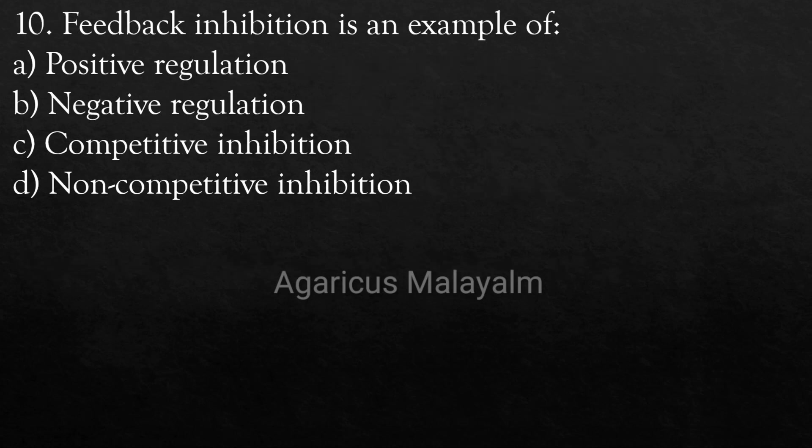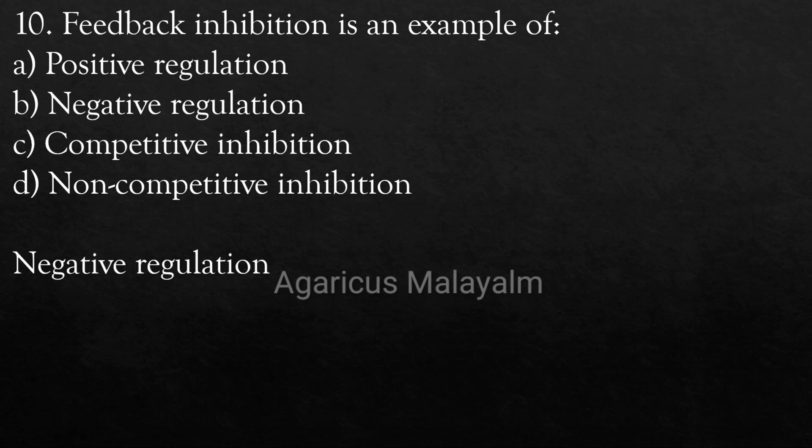Tenth Question: Feedback inhibition is an example of? Option A: Positive regulation. Option B: Negative regulation. Option C: Competitive inhibition. Option D: Non-competitive inhibition. Correct Answer: Option B — Negative regulation.